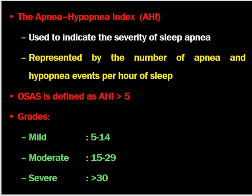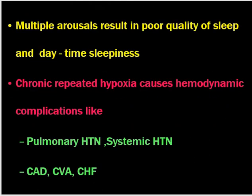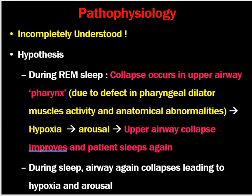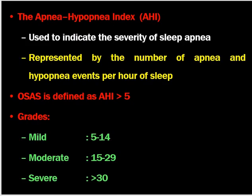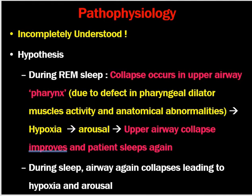The apnea-hypopnea index (AHI) indicates the severity of sleep apnea, represented by the number of apnea and hypopnea events per hour of sleep. An AHI less than 5 is considered normal. It is graded as mild when AHI is 5 to 14, moderate 15 to 29, and severe more than 30. In severe sleep apnea, there will be around one episode of apnea or hypopnea every two minutes of sleep.